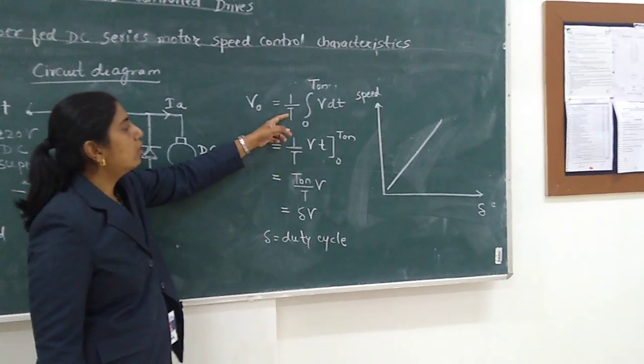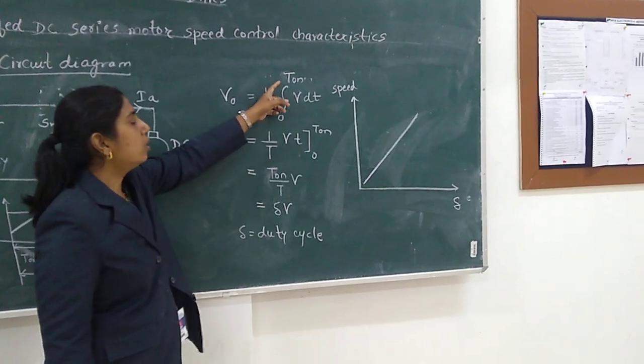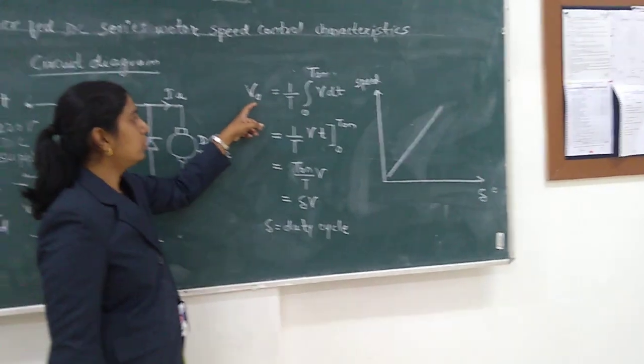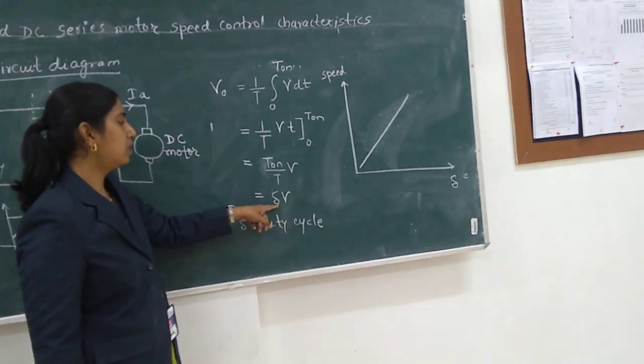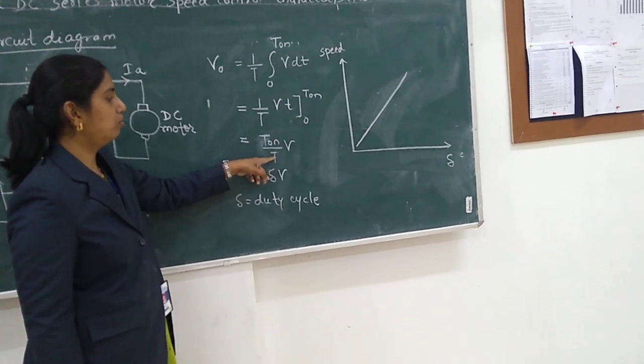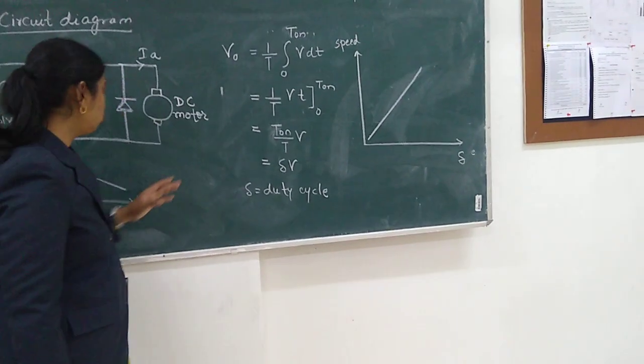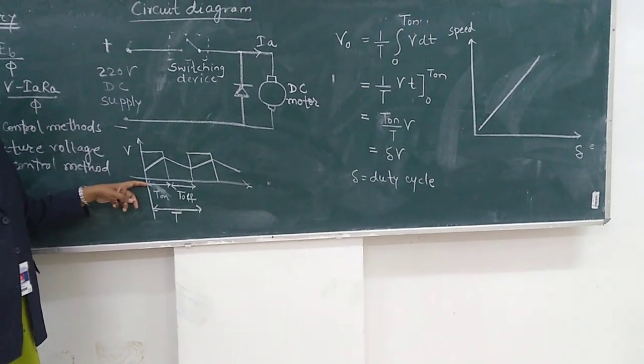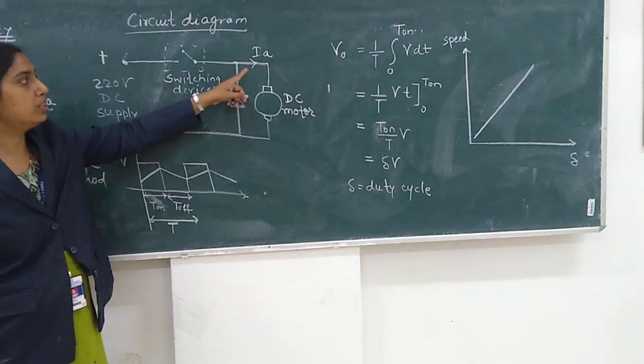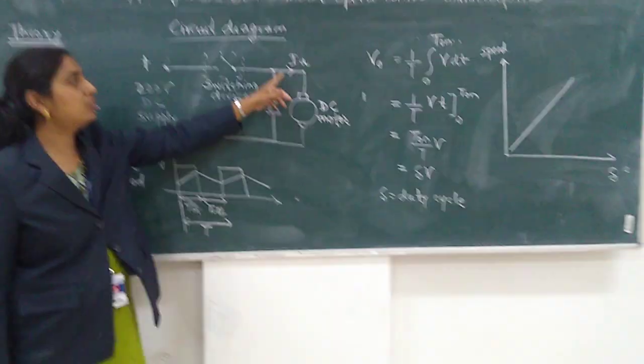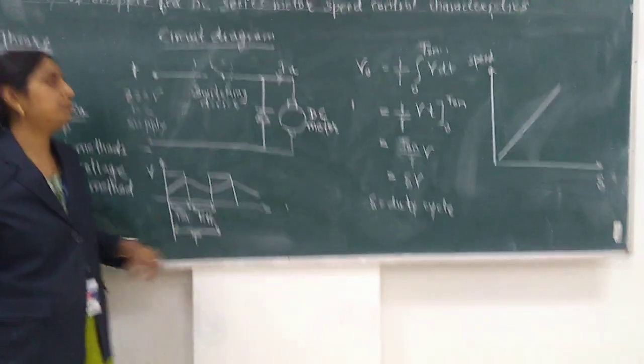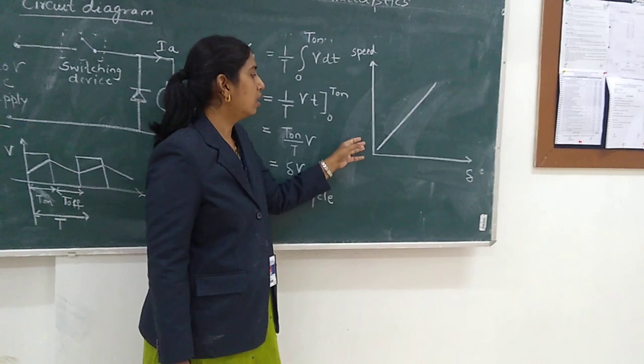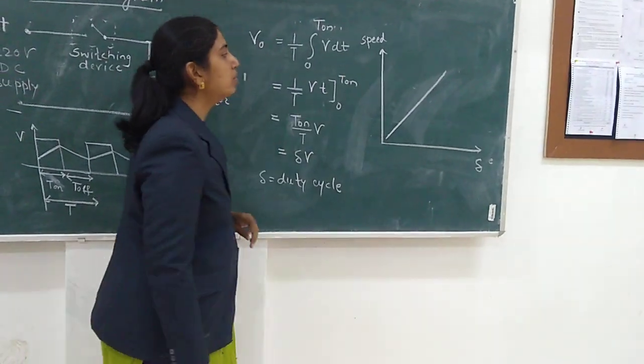The average voltage across our armature is delta times V, where delta is the duty cycle of the chopper and it is given by Ton over T. So in our experiment we are going to observe this waveform on the CRO. We are going to vary this period and by that we are going to vary the output voltage of this chopper which is fed to the armature of this motor. When the voltage across the armature varies, the speed of the motor will vary. So our characteristic will be: voltage on the X axis and speed on the Y axis. So let us perform this experiment now.